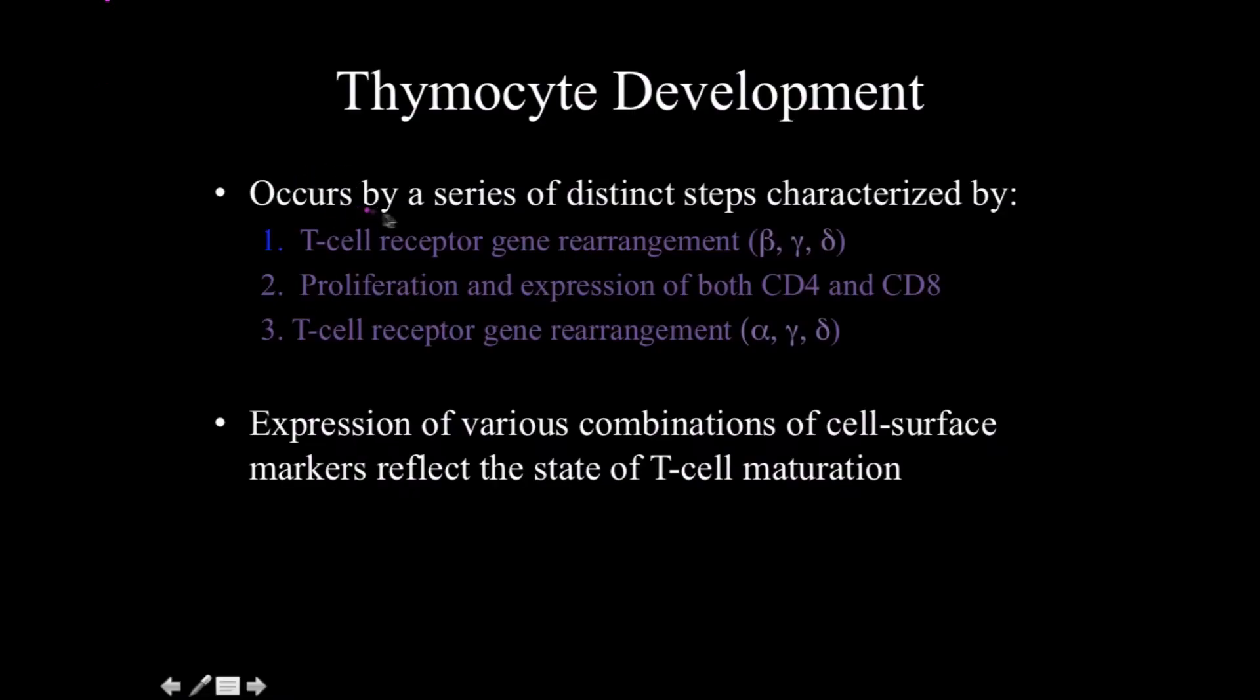The development of thymocytes occurs by a series of distinct steps characterized by T cell receptor gene rearrangement. First we do beta, and then gamma and delta together. This includes proliferation and expression of both CD4 and CD8, so we call them double positive. Then T cell receptor gene rearrangement happens for the alpha chain, and then further for gamma and delta. The expression of various combinations of cell surface markers reflect the state of T cell maturation.